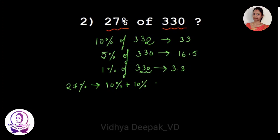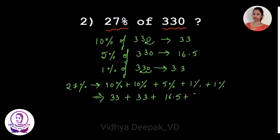So 27 percent is 10 percent + 10 percent + 5 percent + 1 percent + 1 percent, which equals 20 + 5 + 1 + 1 = 27. That gives us 33 + 33 + 16.5 + 3.3 + 3.3 = 89.1. So 27 percent of 330 is 89.1.